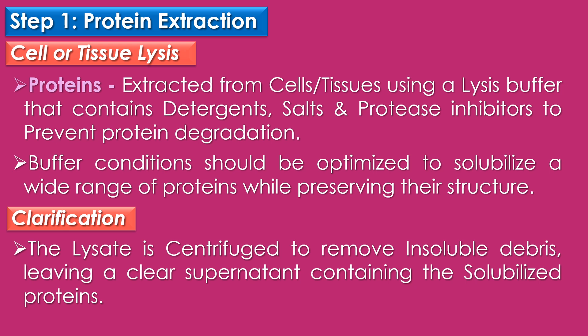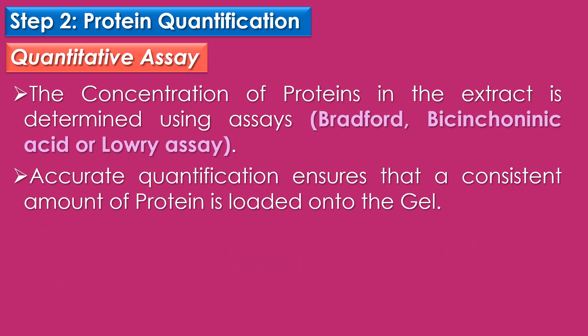Step one is protein extraction, which has two sub-steps: cell or tissue lysis, and clarification. In cell or tissue lysis, proteins are extracted using a lysis buffer that typically contains detergents, salts, and protease inhibitors to prevent protein degradation. The buffer conditions should be optimized to solubilize a wide range of proteins while preserving their structure. In clarification, the lysate is centrifuged to remove insoluble debris, leaving a clear supernatant containing the solubilized proteins.